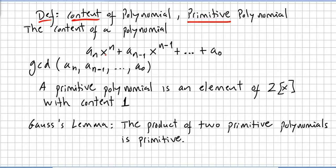...if we have a polynomial anx^n + an-1x^(n-1) + ... + a0, the content is the greatest common divisor of the coefficients. So the greatest common divisor—you are going to get the content, the content of the polynomial.